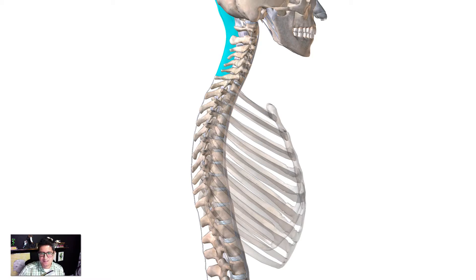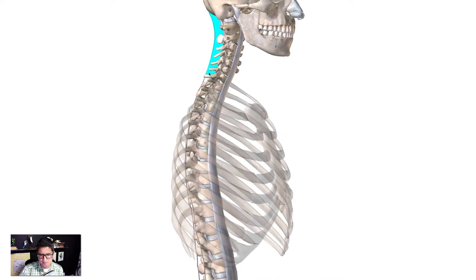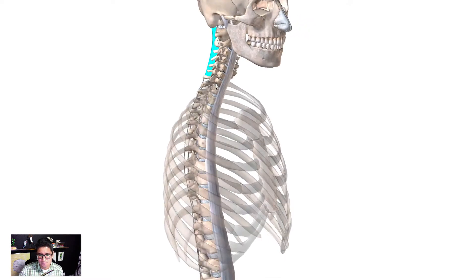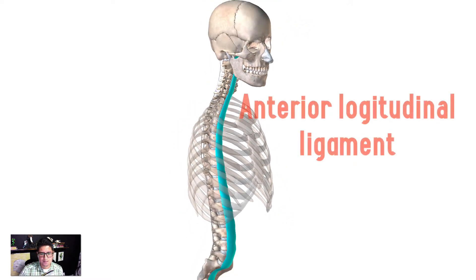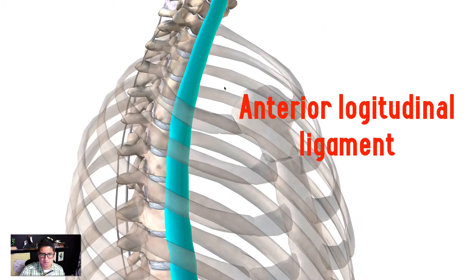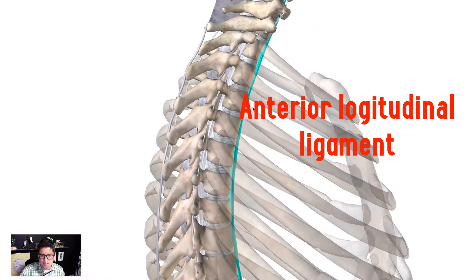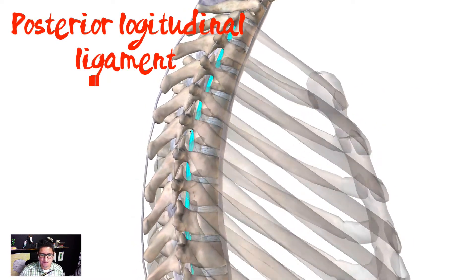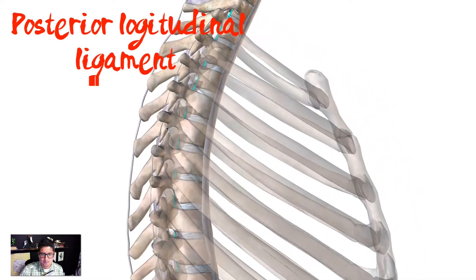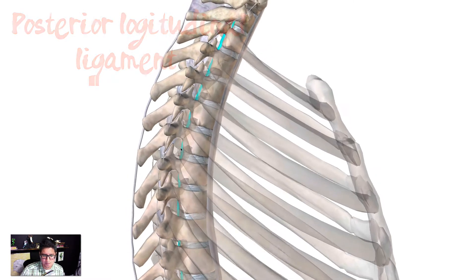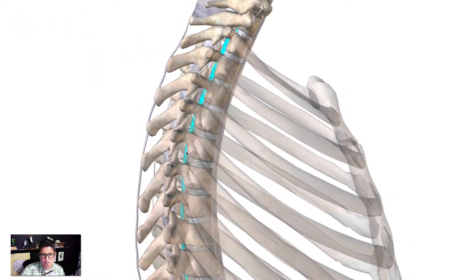One of the first things I want to highlight is the ligaments of the spine. The ligaments help to support the spine, and there are three main ligaments. The first is the anterior longitudinal ligament, and just posterior to it is the posterior longitudinal ligament. These two ligaments help to support the posterior and anterior aspects of the spine to prevent hyperflexion.